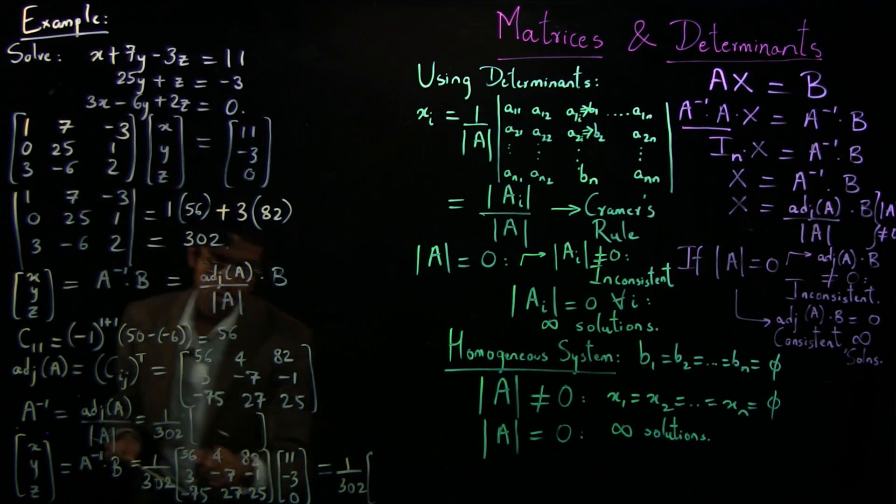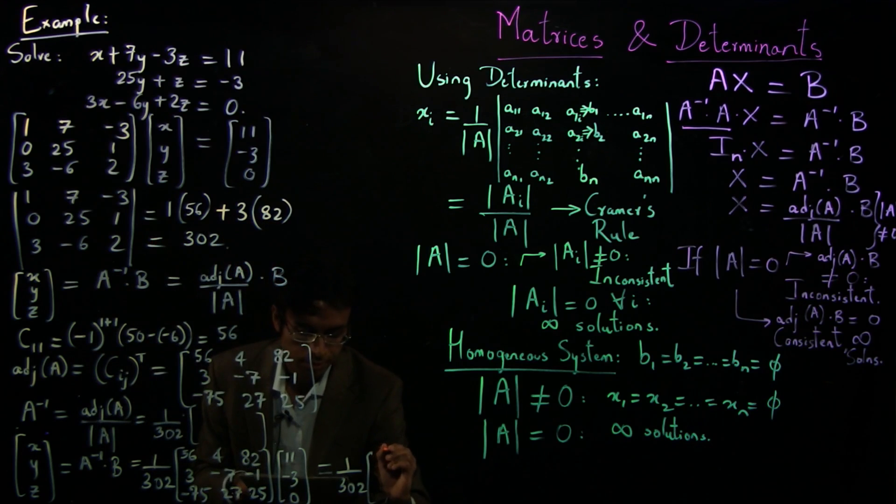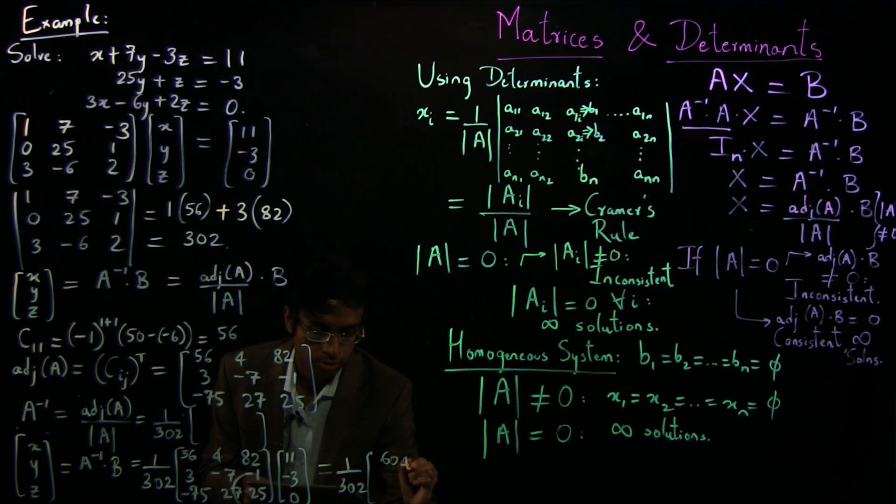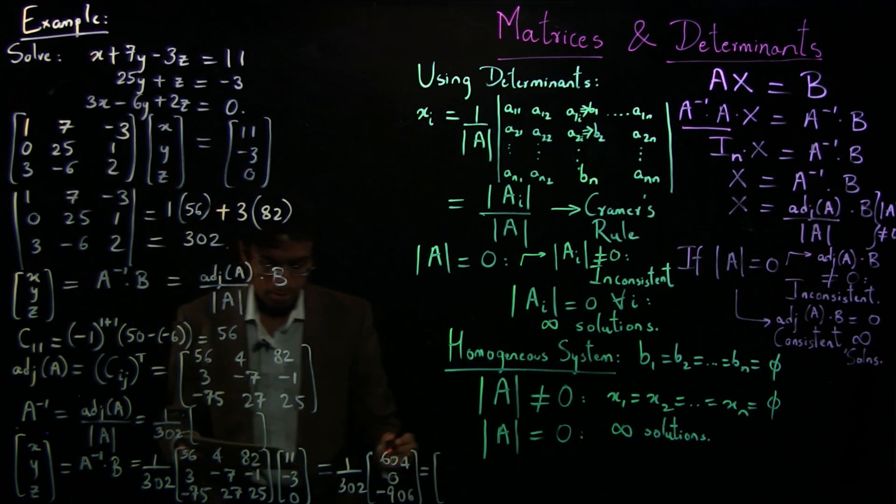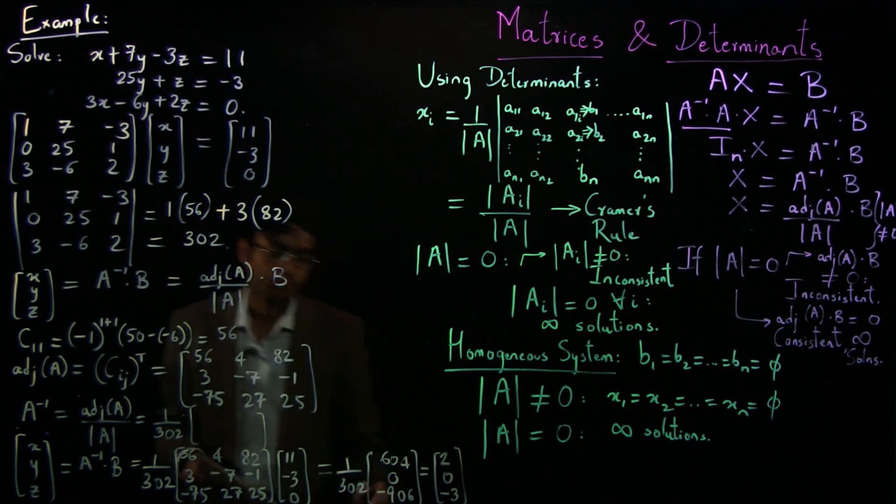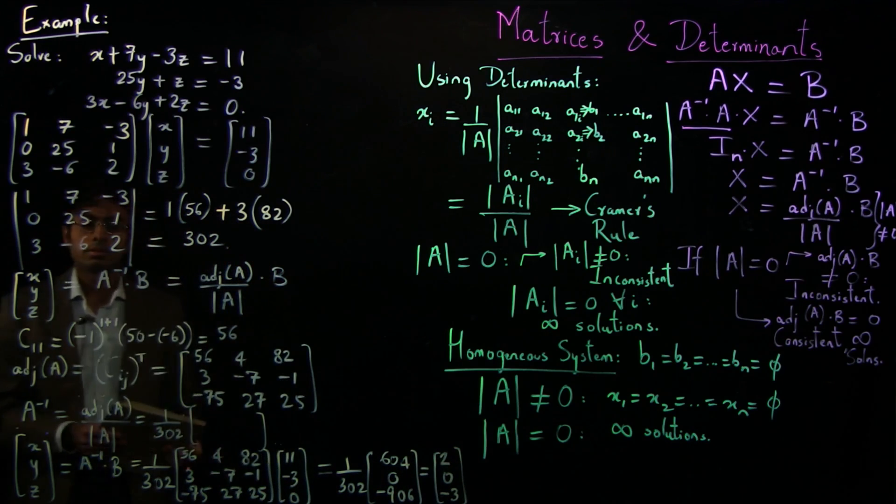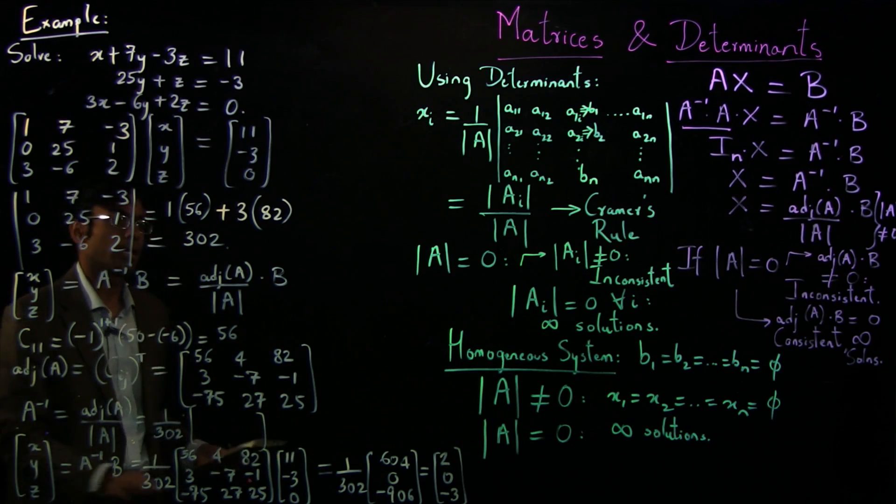And you can show that this works out to be 604, 0, minus 906. Which finally gives you x is 2, y is 0, and z is minus 3. So this is one way to find out the values of x, y, and z.